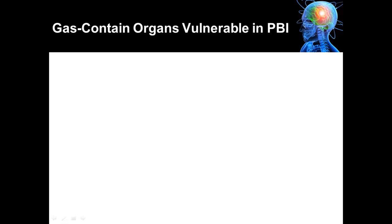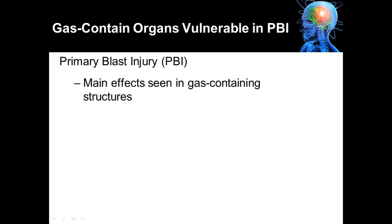We're going to first look at the parts of the body that are more vulnerable to being damaged by the primary blast injury, abbreviated PBI. The main effects are seen in gas-containing structures such as the ear — the middle part of the ear is actually air filled — the lung, and the bowel.